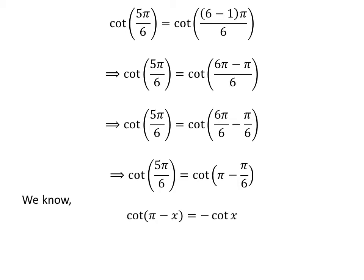We know the famous trigonometry identity: cotangent of pi minus x is equal to minus cotangent of x. The proof of this identity has been explained in the video appearing in the upper right corner, and the link is also given in the description. Applying this identity gives us cotangent of 5 times pi upon 6 is equal to minus cotangent of pi upon 6.